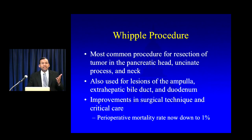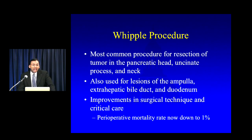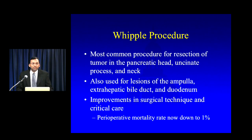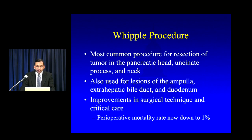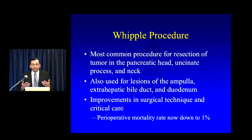For many years, the Whipple procedure was a dreaded surgery with massive mortality and huge morbidity. But there have been dramatic improvements in both surgical technique and critical care, and imaging has helped clinicians deal with many of the complications. Accordingly, perioperative mortality rates are now relatively low — under 1% — although there is still a quite significant rate of complications. It is worth noting that complication and mortality rates are much lower if you undergo the procedure at a major center that performs many of these procedures every year.